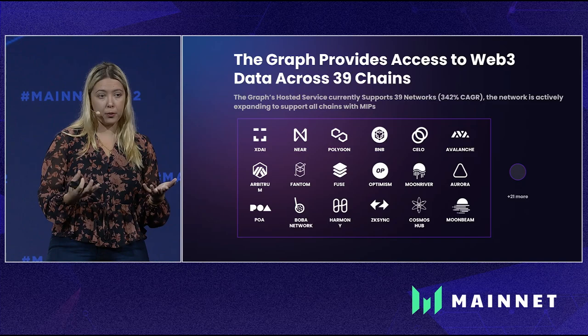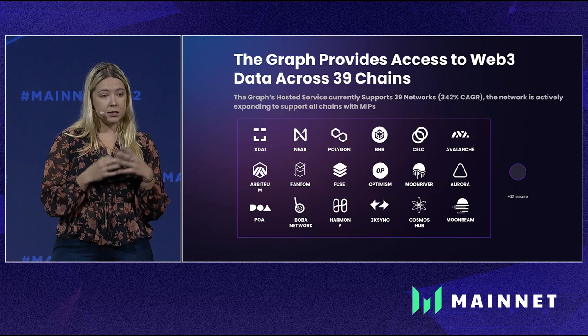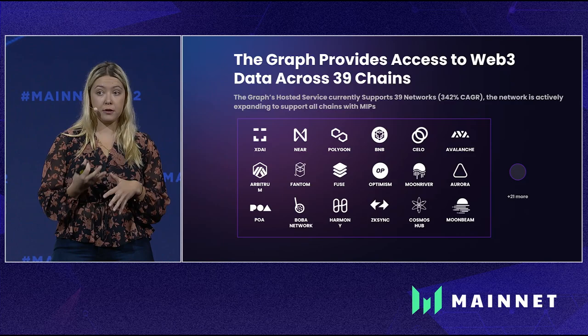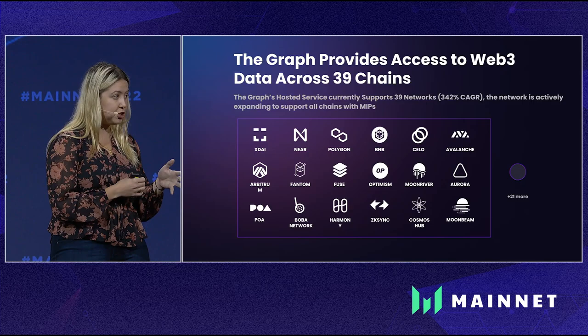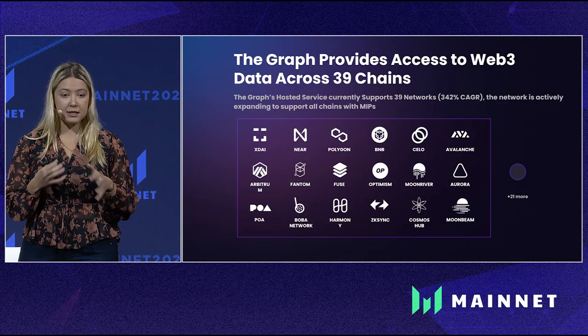The Graph currently supports 39 chains. For the Protocol Metrics team, this is extremely important to provide a holistic view of Web3 — it's not about picking one chain, but providing standardization across chains and protocols. Today we serve 39 chains on our hosted service. Our network currently supports Ethereum, and we're expanding to Gnosis Chain imminently, with all other chains coming to the network over the next six months.